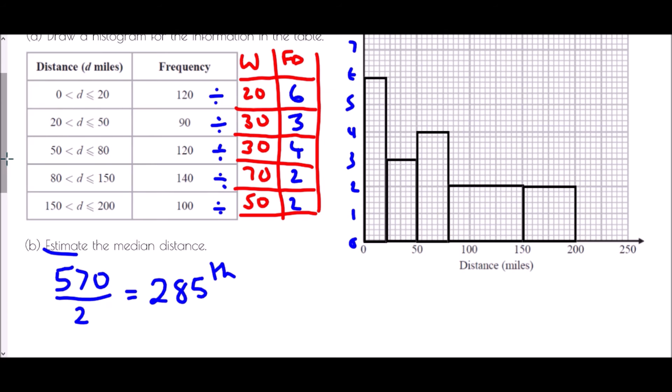Now what I would need to do here is if this was just using the diagram I would need to find the area of each bar but I already know this. That's 120 and this one is 90 so so far I have used 210 people. The next group is 120 again and that takes me up to 330 and so I've gone beyond the 285th person. The 285th person must be within this group.